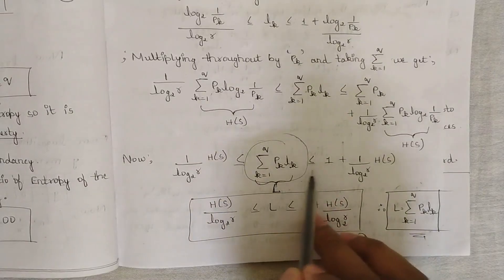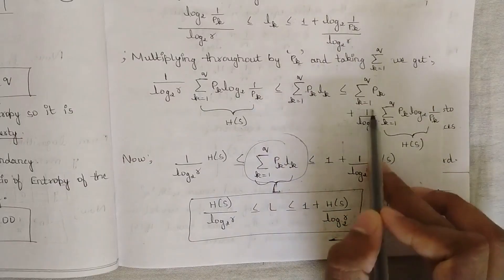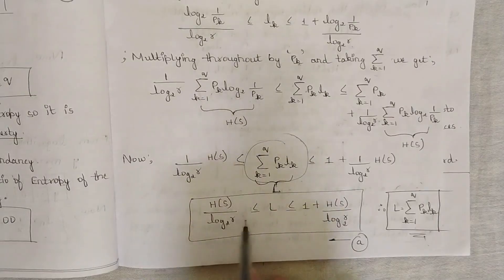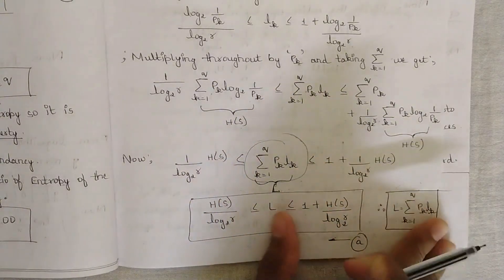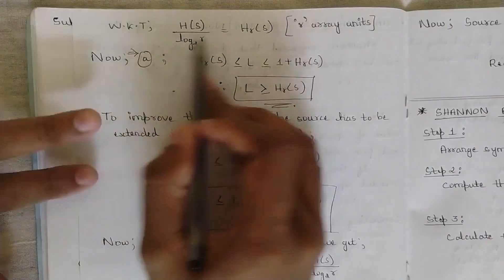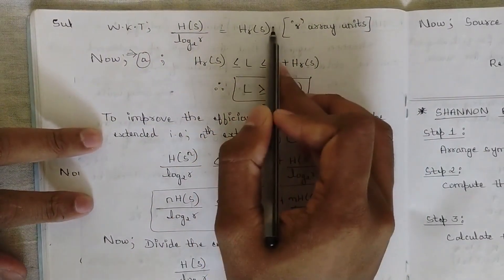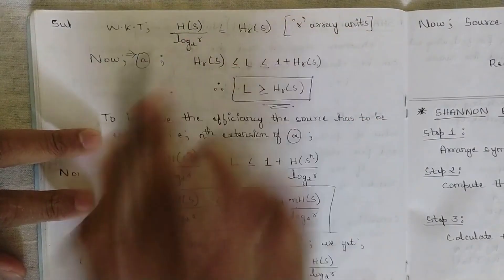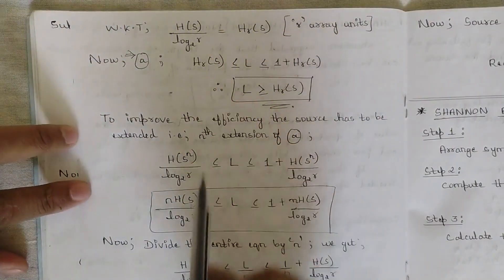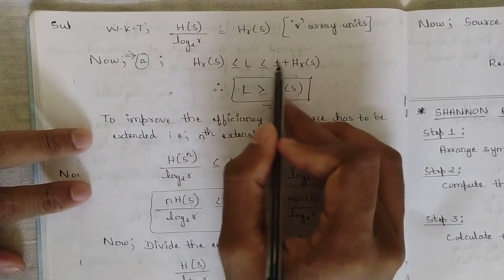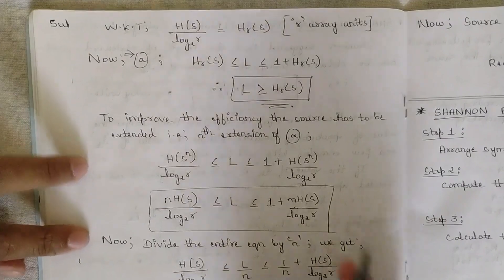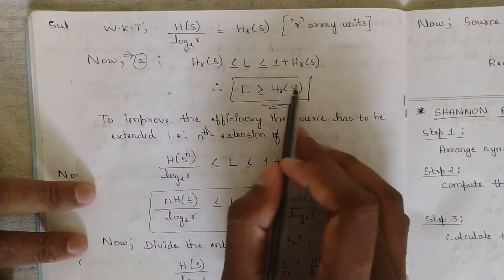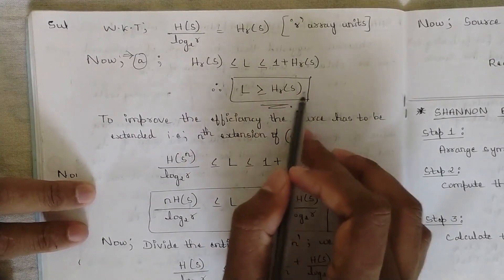Substituting and simplifying, and noting that summation of P(K) = 1, we get: H(S)/log(R) base 2 ≤ L ≤ 1 + H(S)/log(R) base 2. Call this Equation A. Since H(S)/log(R) base 2 can be written simply as H(S) in r-ary units, Equation A becomes H(S) ≤ L ≤ 1 + H(S). From this we conclude that the average length of the code word is greater than or equal to the r-ary entropy H(S).